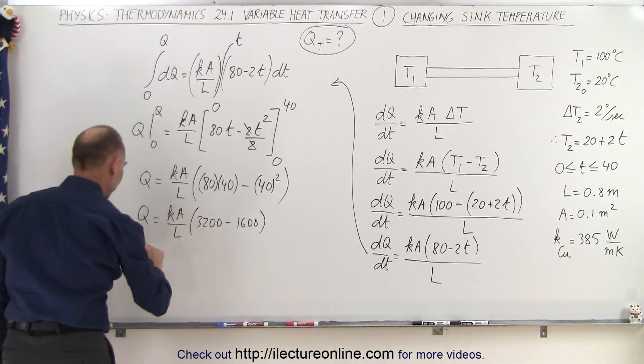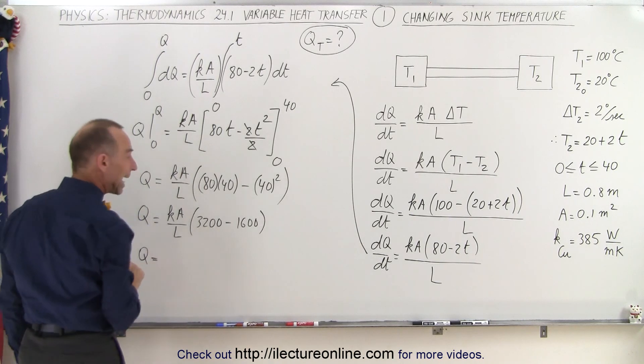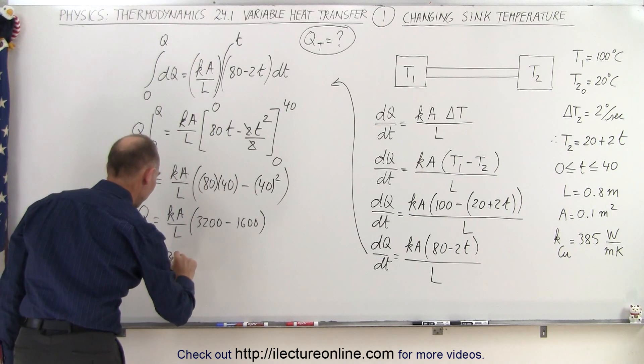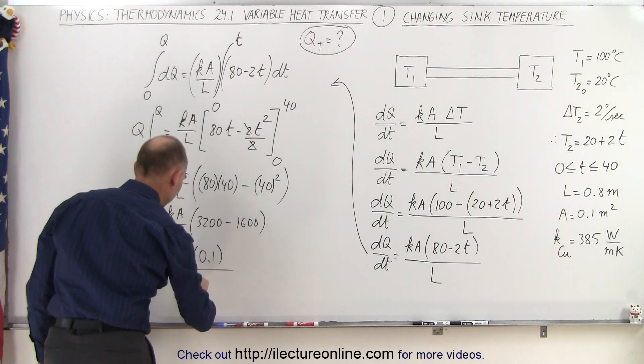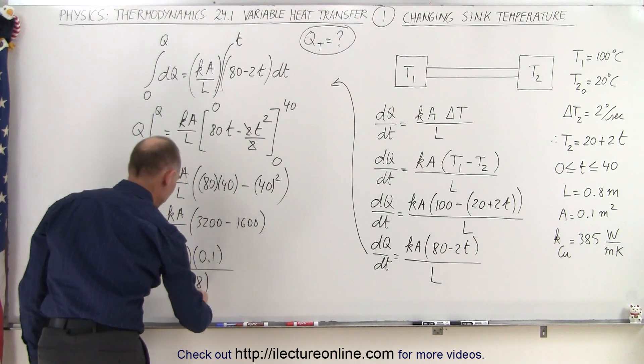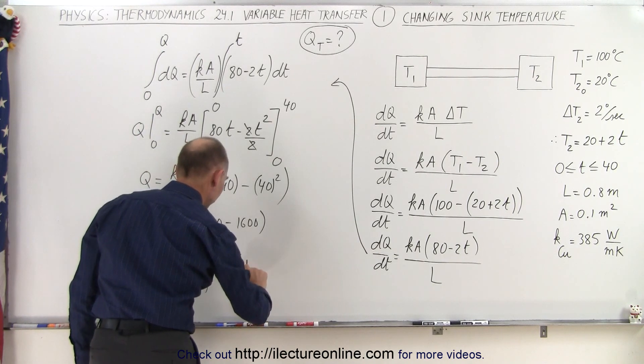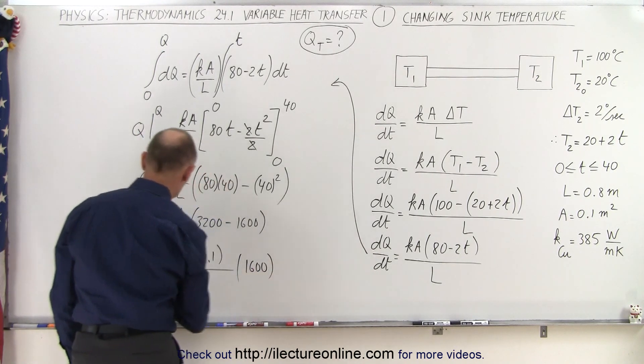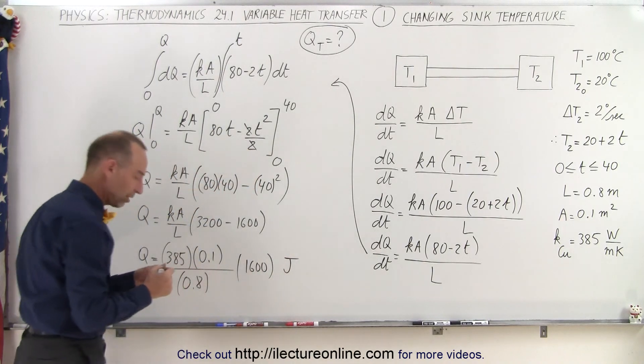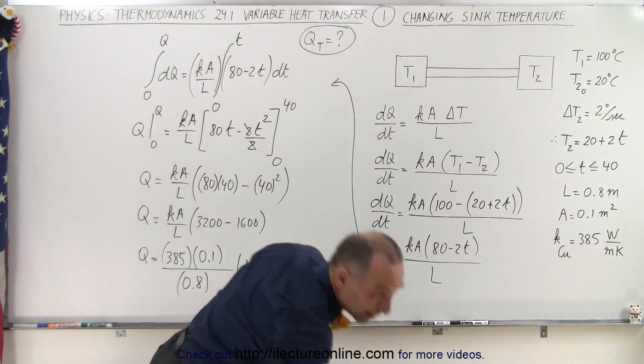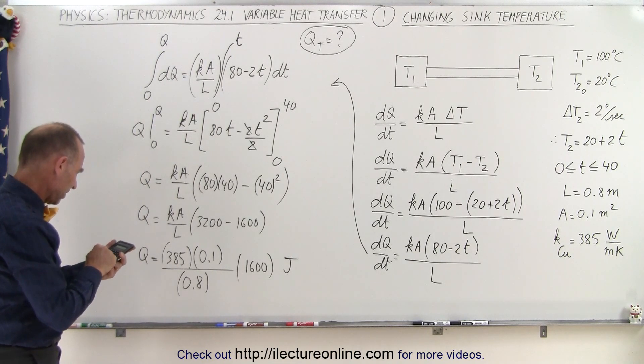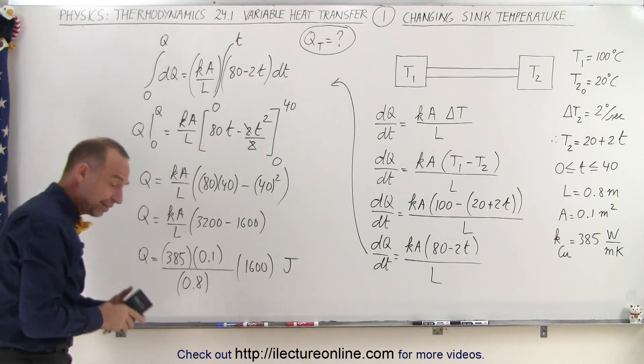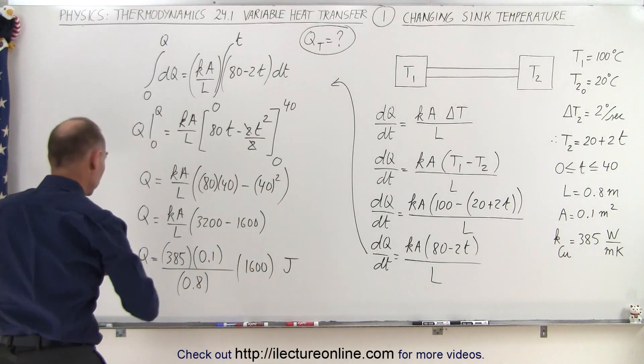So now we're plugging the value. So we get Q is equal to k, that's 385 times the cross-section area, 0.1 divided by the length, 0.8. And this difference here would be 1600. And of course, the units Q will be in joules, total heat transferred. Now all we need is to calculate to figure out how much that was. 385 times 0.1 divided by 0.8 times 1600, and we get 77,000 joules.